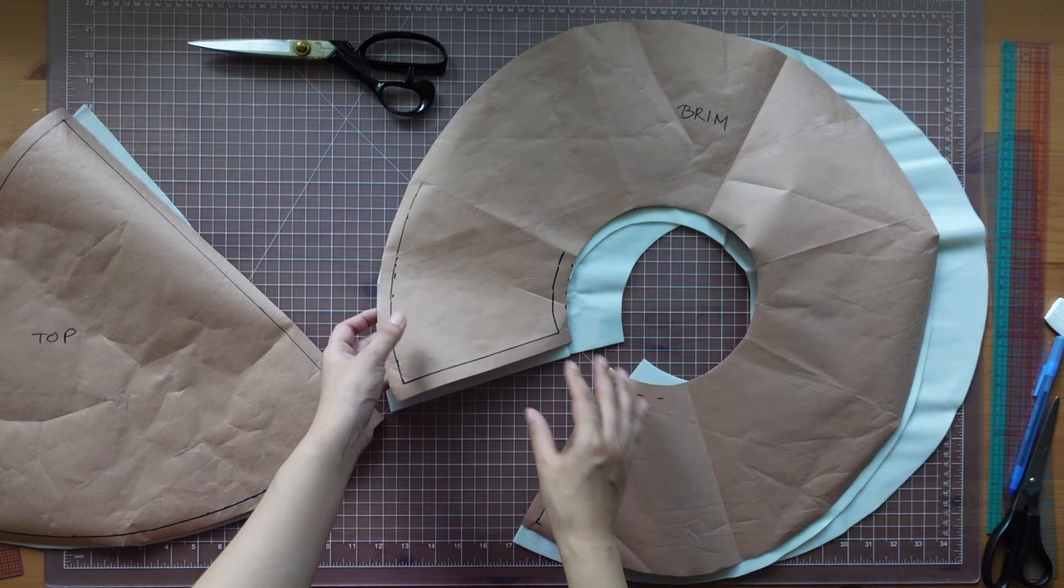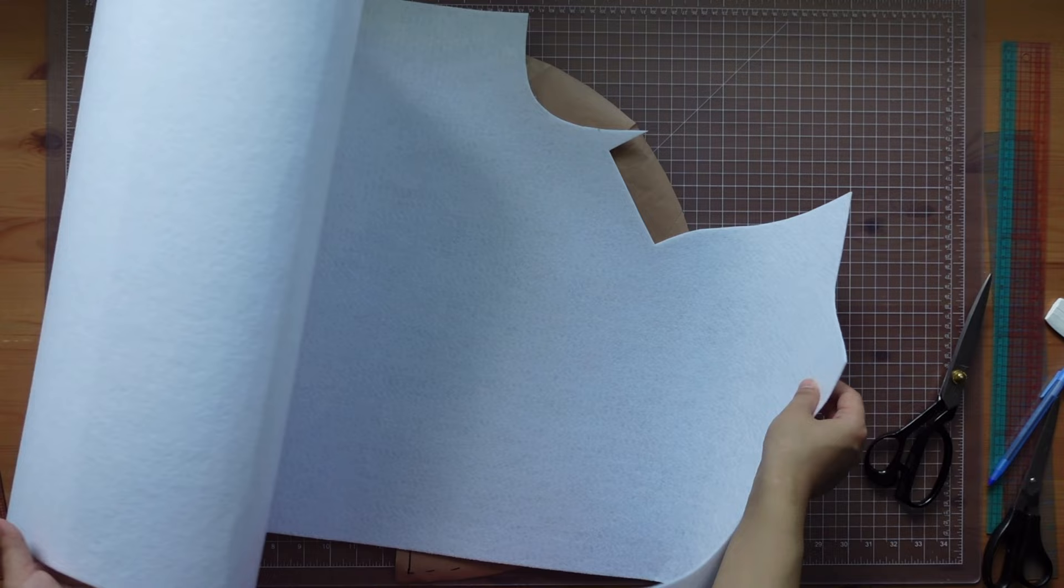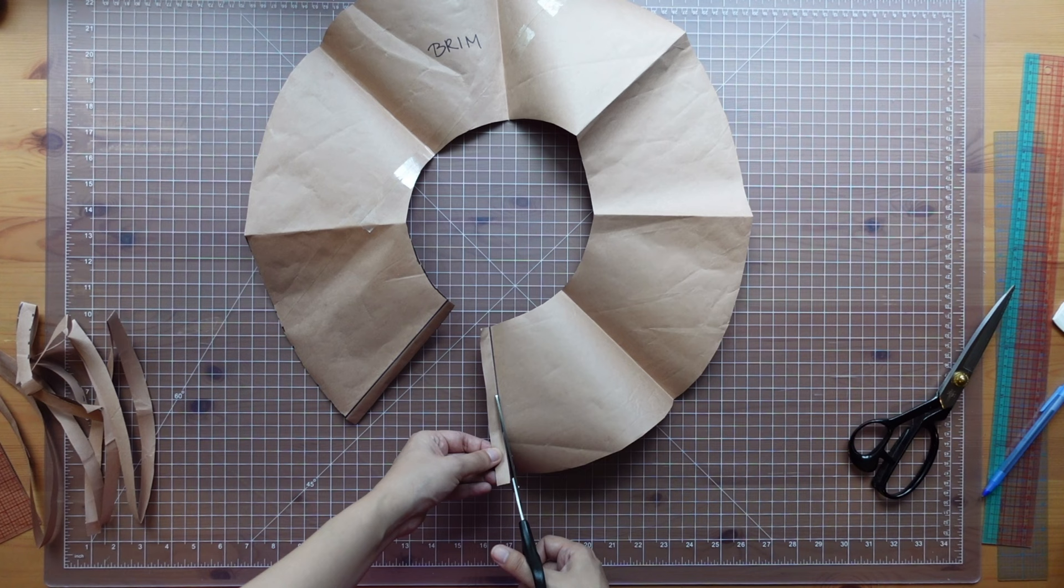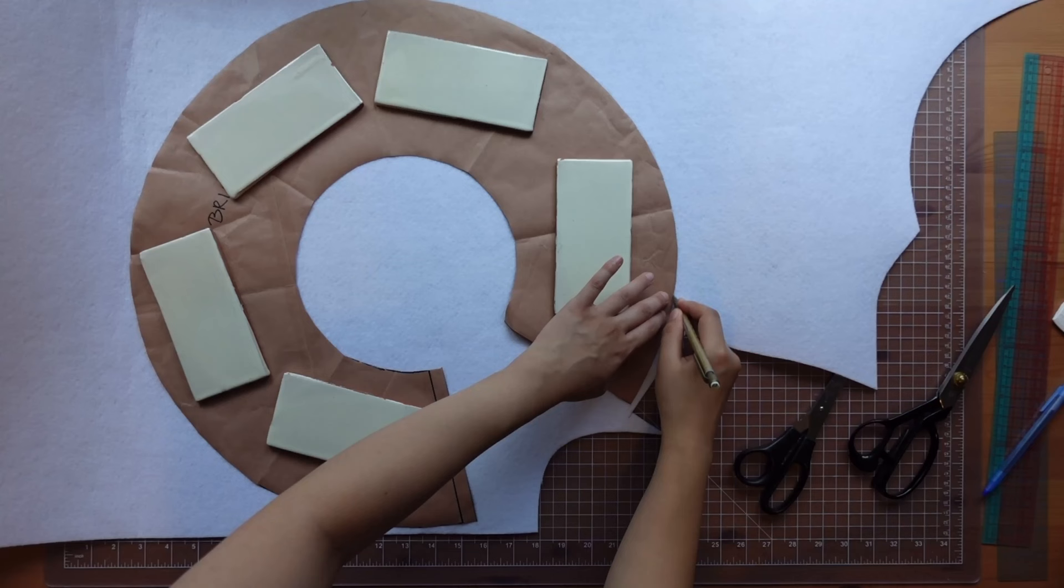For the hard structure of the brim, I used thick sew-in interfacing. I removed all the seam allowance except for the one side of the center back. I cut it like this so I could overlap the ends like this to reduce bulk.